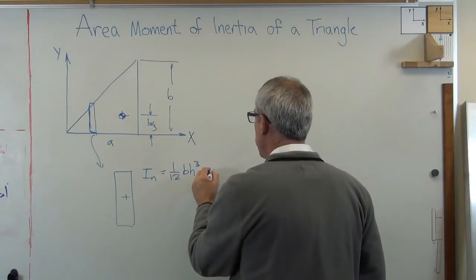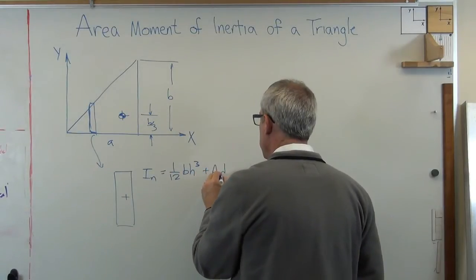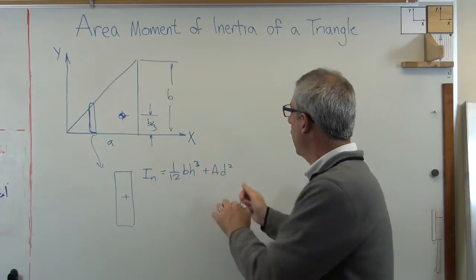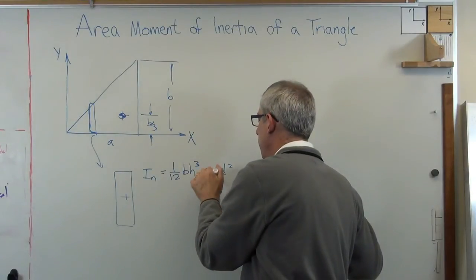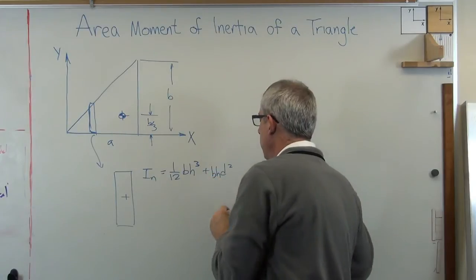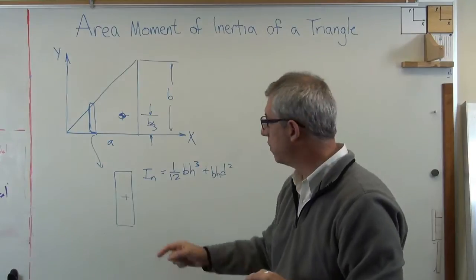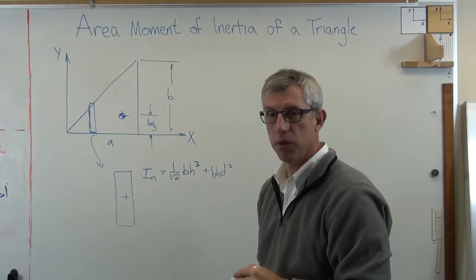So what I have to do now is add an AD squared term where, area is base times height. D squared. Now D is the distance between that centroid and that one. So it's going to be H over 2 minus B over 3.